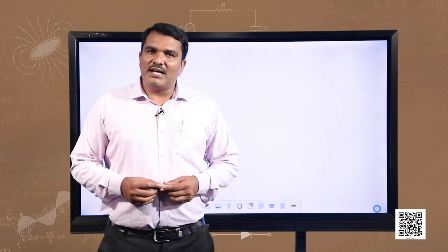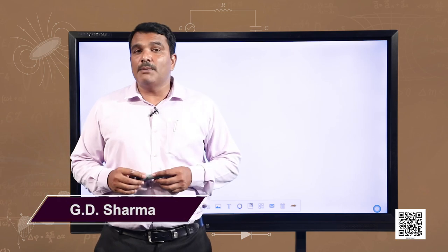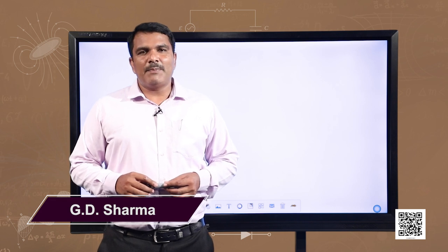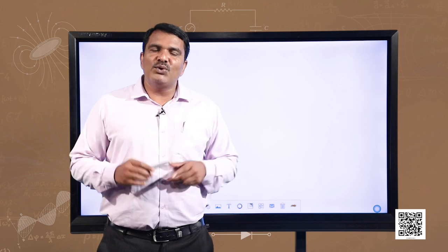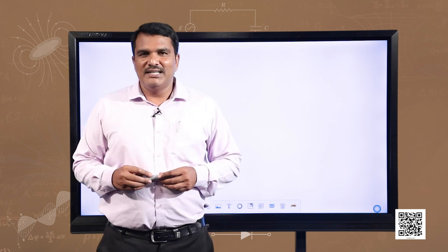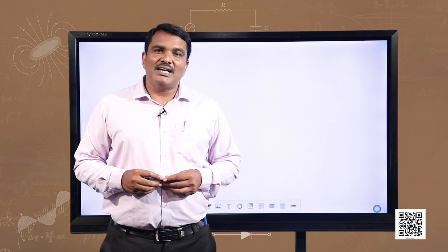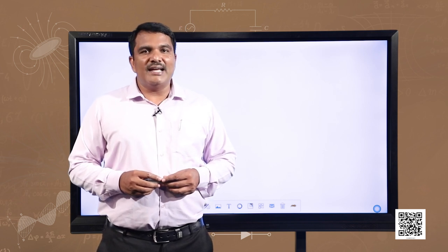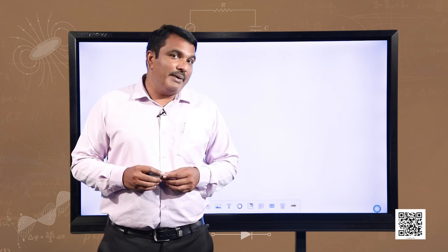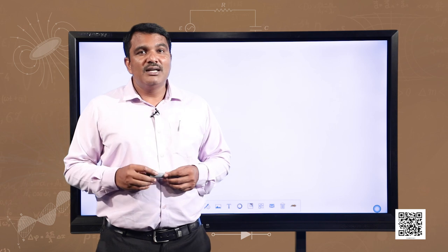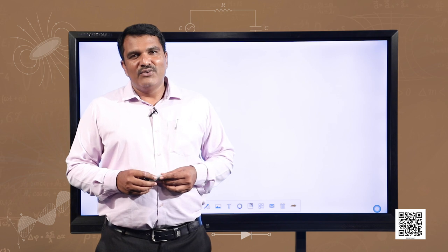Welcome viewers. We know that an electric dipole is a pair of equal and opposite charges separated by a small distance. Examples of dipoles are HCl molecule, water molecule, etcetera. We also know that a charge placed in an external electric field experiences a force. In this program we are going to discuss the behavior of a permanent electric dipole in a uniform electric field.